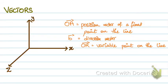Alright, so vectors. The first part of this topic is basically forming the vector equation of the line. To form a line equation, we need a fixed point on the line. OA is basically the position vector of the fixed point on the line.